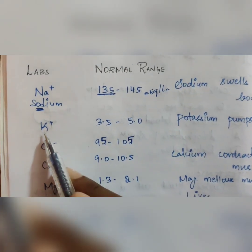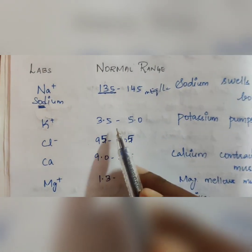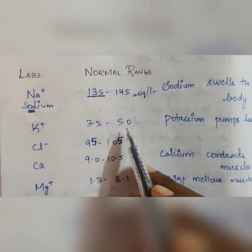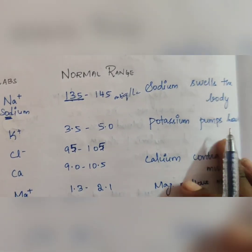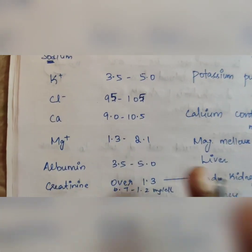Next, K plus is potassium. Potassium normal range is 3.5 to 5.0. Potassium pumps heart. This is the other action.